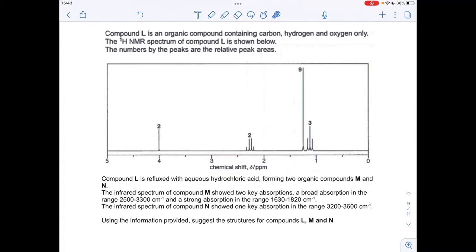So it's pretty safe to assume that M must be a carboxylic acid. From the information about N, we can see one key absorption in this range here, so the likelihood is that N is an alcohol.